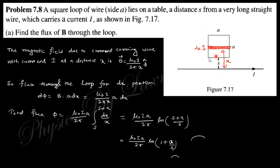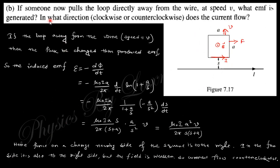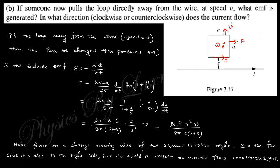Next: if someone pulls the loop directly away from the wire with velocity V, what is the EMF generated? The EMF is dΦ/dt. Since S changes with time, dS/dt = V. Taking the derivative of the flux expression, you get the induced EMF as μ₀IA²V / [2π·S·(S+A)].